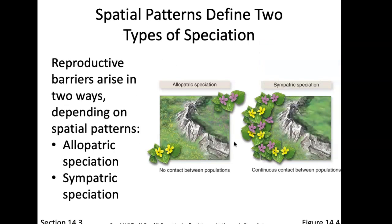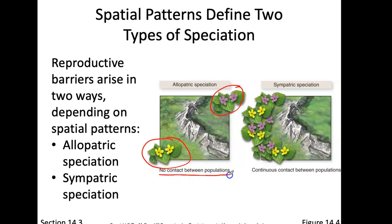Sometimes organisms will be separated by a spatial pattern. A reproductive barrier arises — in this case, a mountain range separating yellow flowers from purple flowers. They are in different locations and may be different species. Allopatric speciation is when there is no contact between those populations — they are geographically isolated by a mountain range, a lake, or a river. They spend so much time changing on their own that they are no longer the same species.